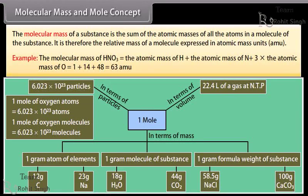For example, the molecular mass of HNO3 is equal to the atomic mass of H plus the atomic mass of N plus 3 times the atomic mass of O, which is equal to 1 plus 14 plus 48, which equals 63 units.